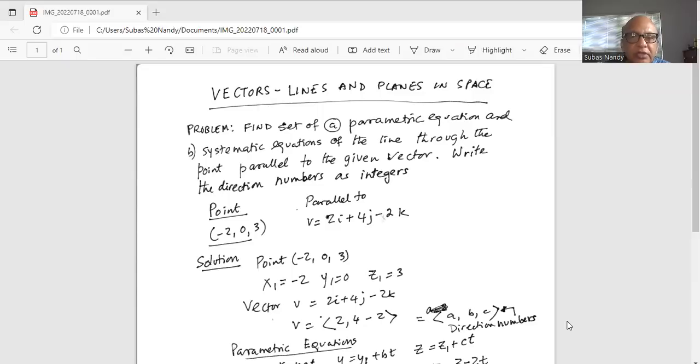So the point is minus two, zero, three and the line we are required to find out is parallel to the vector 2i plus 4j minus 2k. So point is minus two, zero, three. So the x coordinate x1 is minus two, y coordinate y1 is zero, and the z coordinate z1 is three.